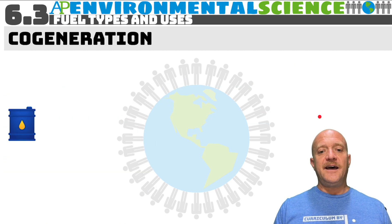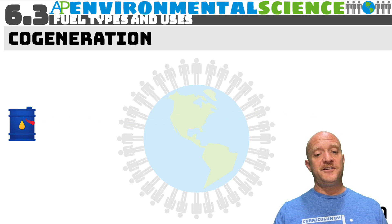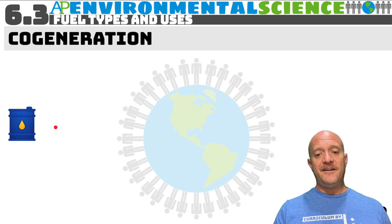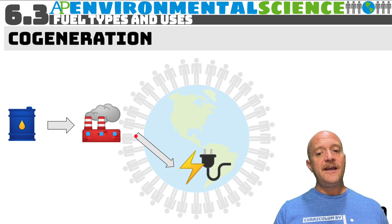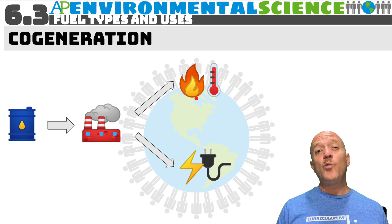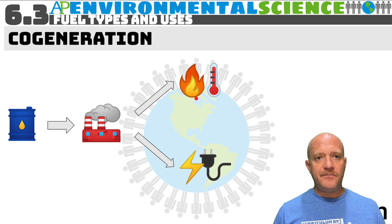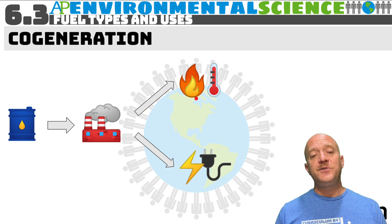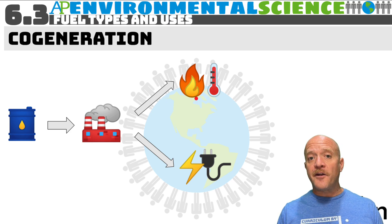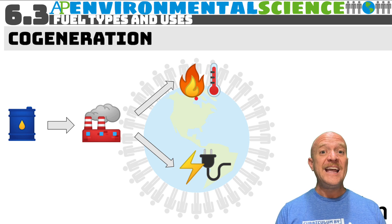There is a term called cogeneration. Cogeneration is when you take a fuel source, convert it into electricity, but also use the waste heat to heat a building. So you're not just generating electricity — you're using the waste water or waste heat that is generated and pumping it into a building for heating purposes.